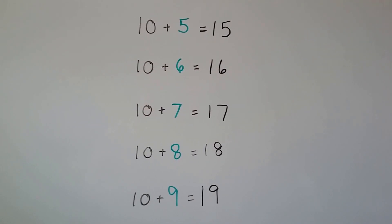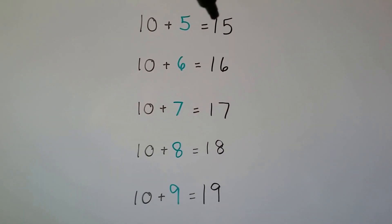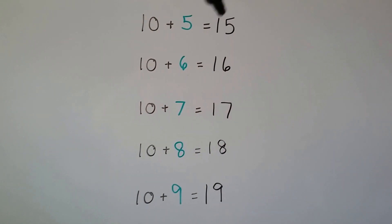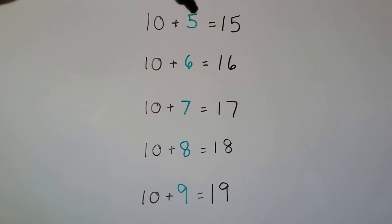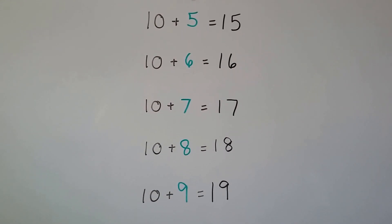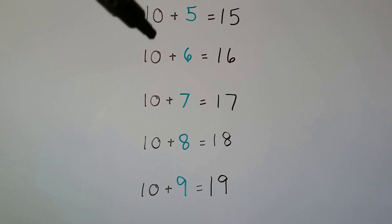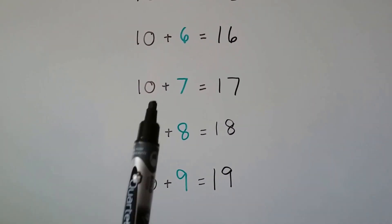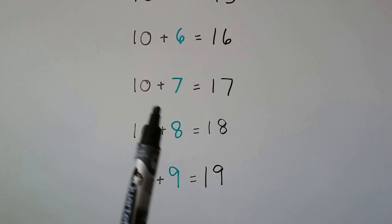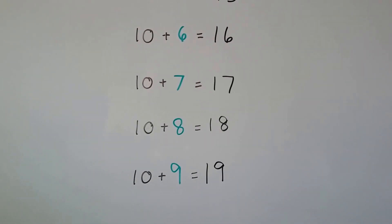There's another pattern you can see in the sums. For 10 plus 5, we have 1 ten and 5 ones. For 10 plus 6, we have 1 ten and 6 ones. For 10 plus 7, we have 1 ten and 7 ones.